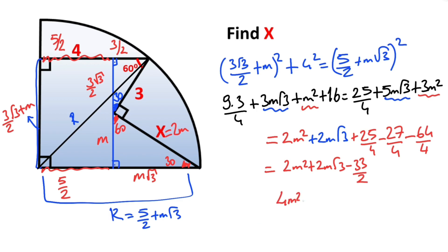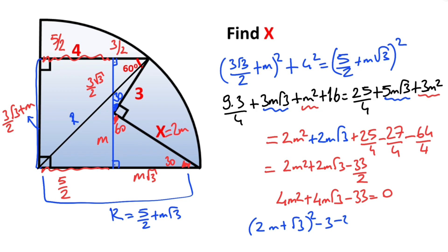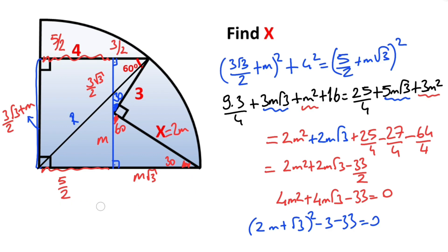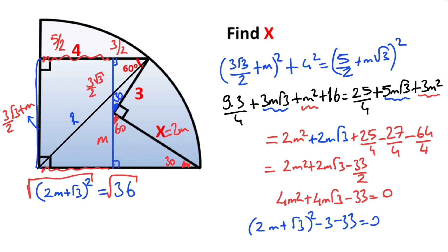If we multiply both sides of the equation by 2, that means 2m² + 4m√3 − 33 = 0. Implementing this expression as a perfect square: (2m + √3)² − 3 − 33 = 0. So (2m + √3)² = 36. Taking the square root of both sides, 2m + √3 = 6.